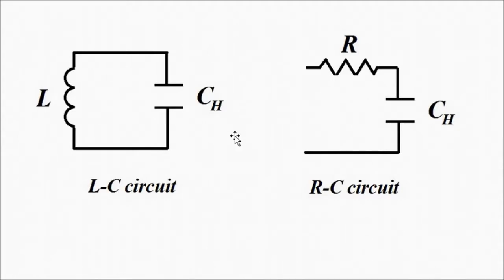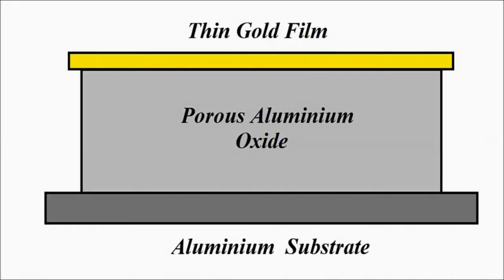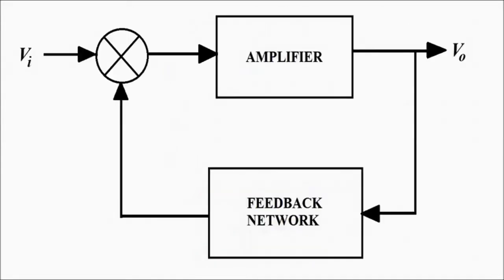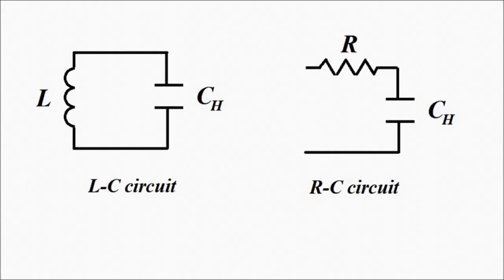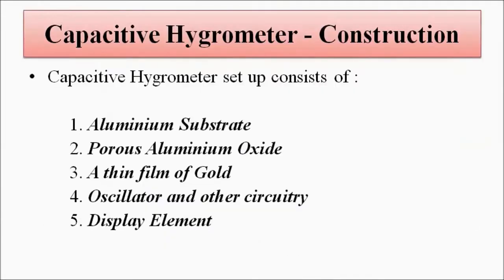This is how we convert the change in capacitance of the capacitive hygrometer into a change in frequency or suitable voltage or current level with the help of an oscillator or AC bridges. This is the basic construction and working principle of the capacitive hygrometer.